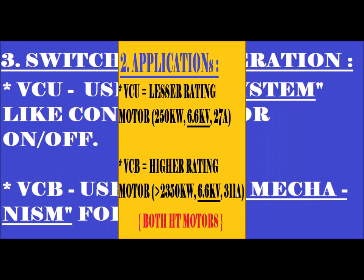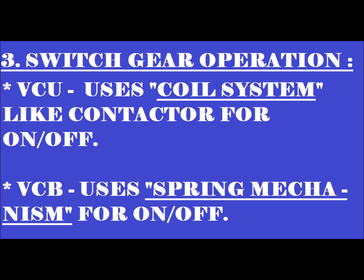The third difference is switchgear operation. In the case of VCU, a coil system is used to make and break — to switch on and off — similar to how a normal auxiliary or power contactor works. In the case of VCB, a spring mechanism combined with a coil system is used.